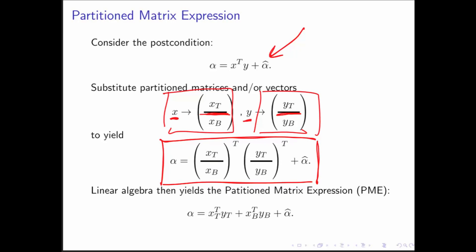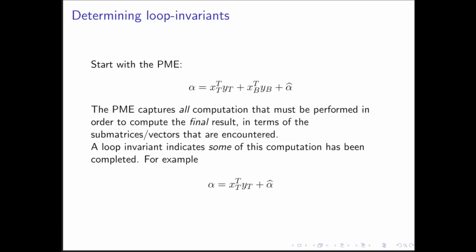In week one, when we talked about slicing and dicing, we made a point of noting that if you have two vectors that have been partitioned and you take their dot product, what you get is the dot product of the first two vectors added to the dot product of the second two vectors. This gives us what we call the partitioned matrix expression.